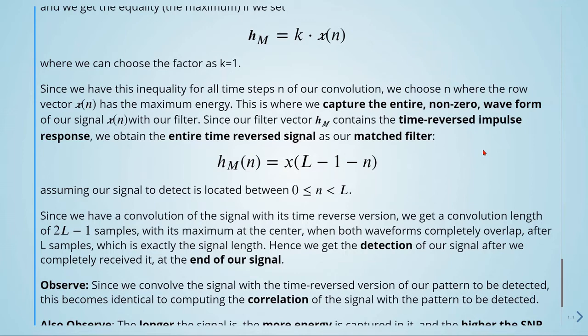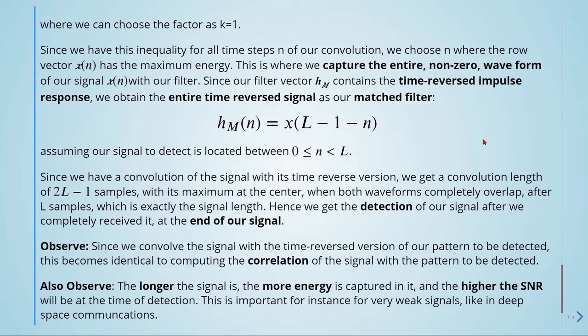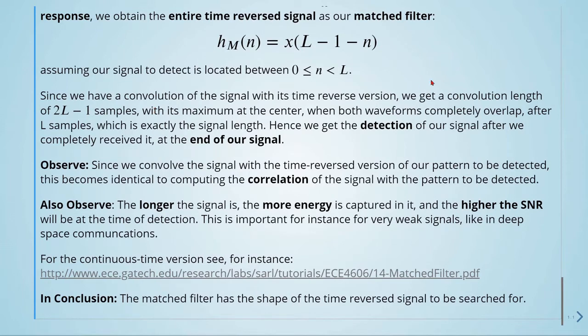This is where we capture the entire non-zero waveform of our signal X of N with our filter. Since our filter vector H_M contains the time-reverse impulse response, we obtain the entire time-reverse signal as our matched filter. Assuming our signal to detect is located between 0 and L. Since we have a convolution of the signal with its time-reverse version, we get a convolution length of 2 times L minus 1 samples with its maximum at the center when both waveforms completely overlap after L samples, which is exactly the signal length. Hence, we get the detection of our signal after we completely received it at the end of our signal.